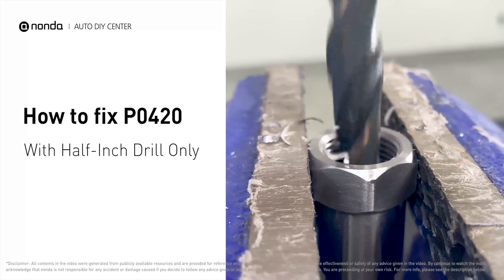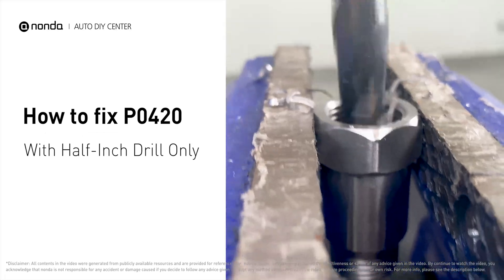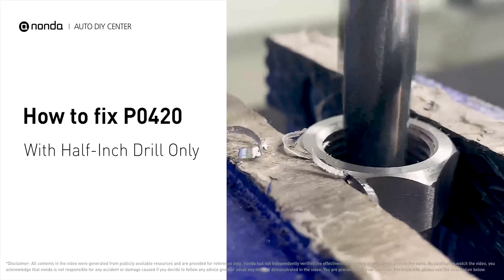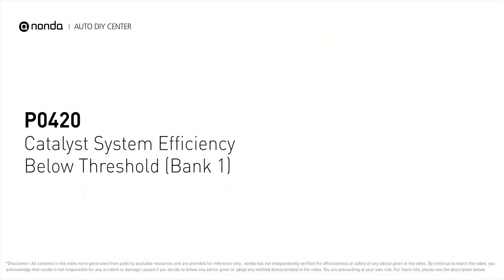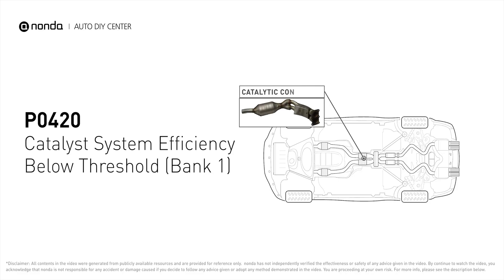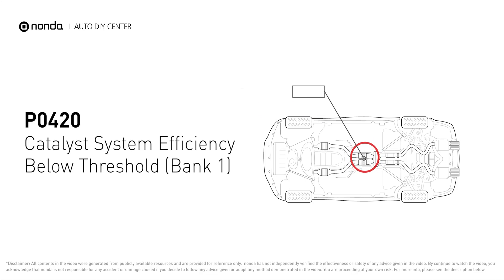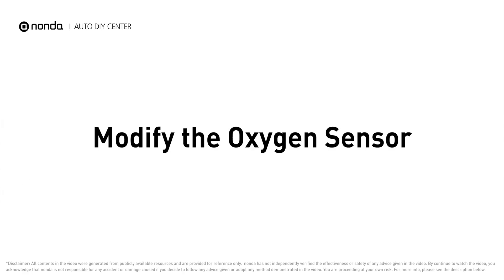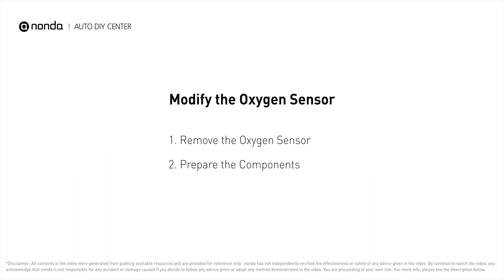With a half inch drill only, you can easily fix the P0420 error code by yourself. P0420 is one of the most common error codes — it means your catalyst system efficiency is below threshold near engine bank one, which indicates that the catalytic converter is not functioning efficiently, so the vehicle is increasing the output of harmful pollutants. If you are getting a P0420 error code, this video is going to show you a practical solution to fix it at home.